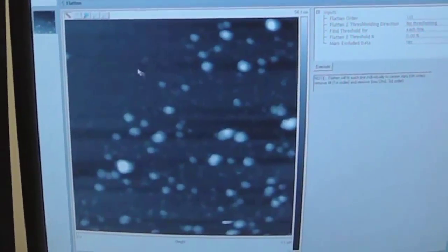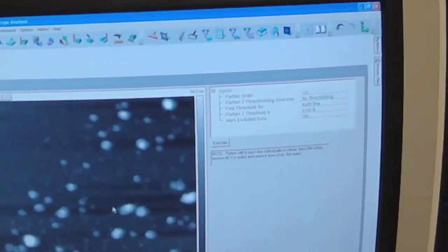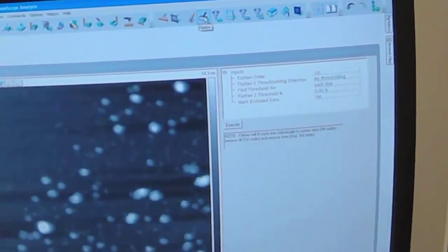First, let's flatten to make sure that the background is flat. We can do that in a couple of ways. Here's the flatten routine. And here it says, let's do a first-order with no threshold. If I click Execute, it did it.